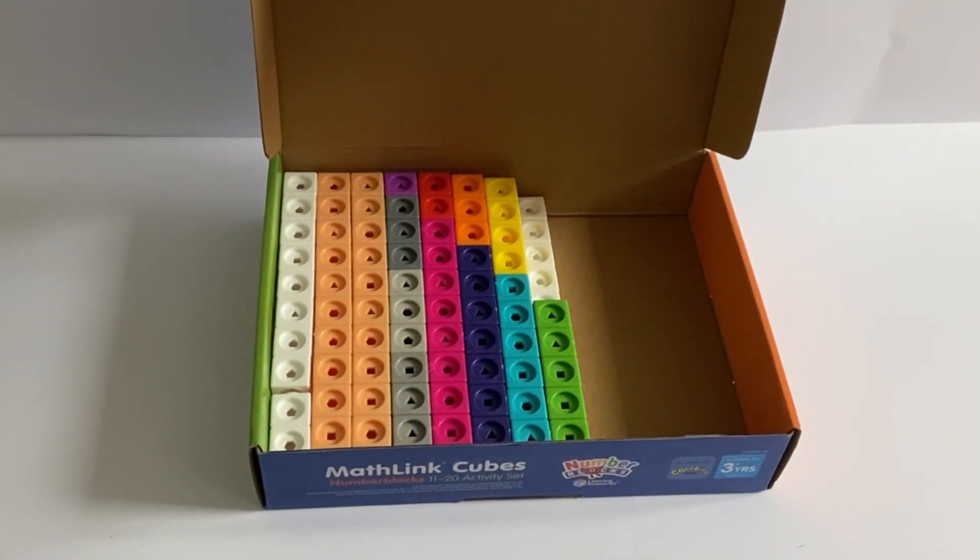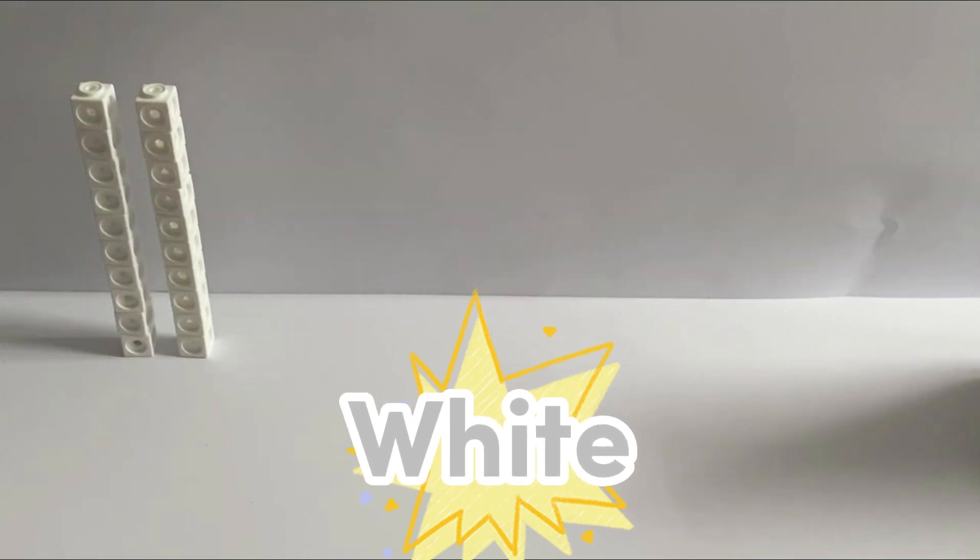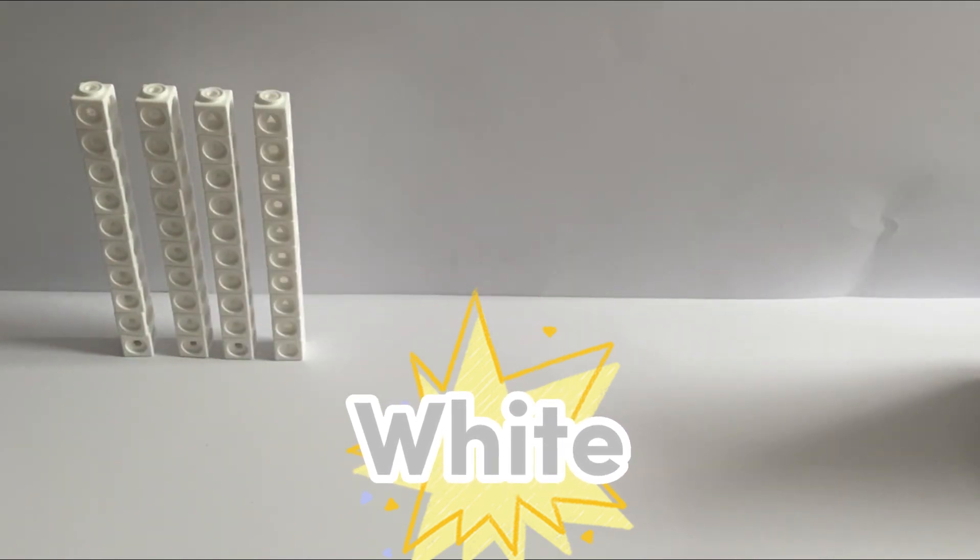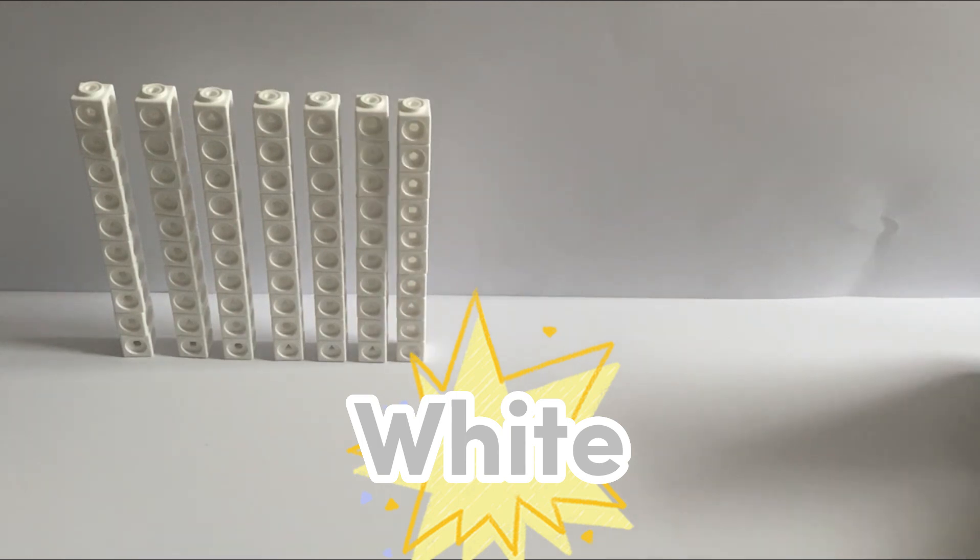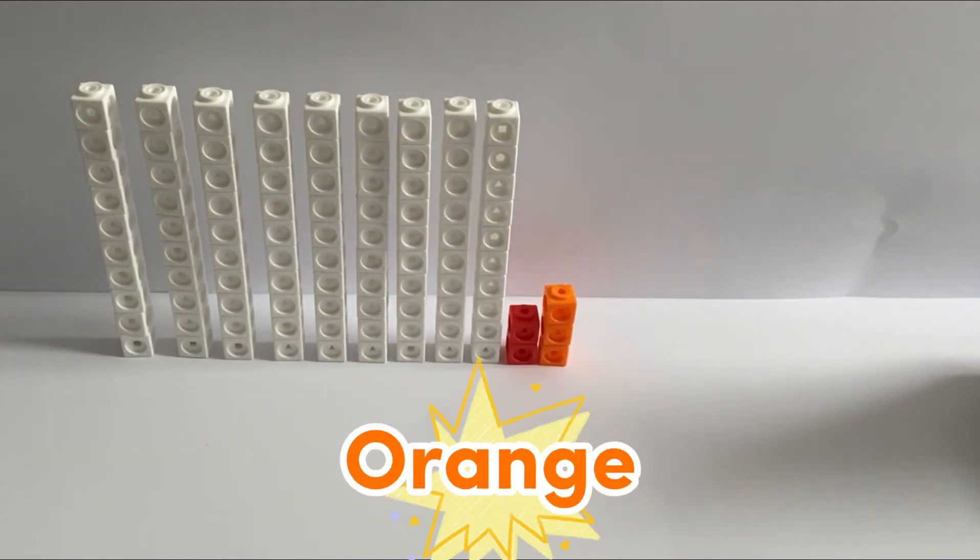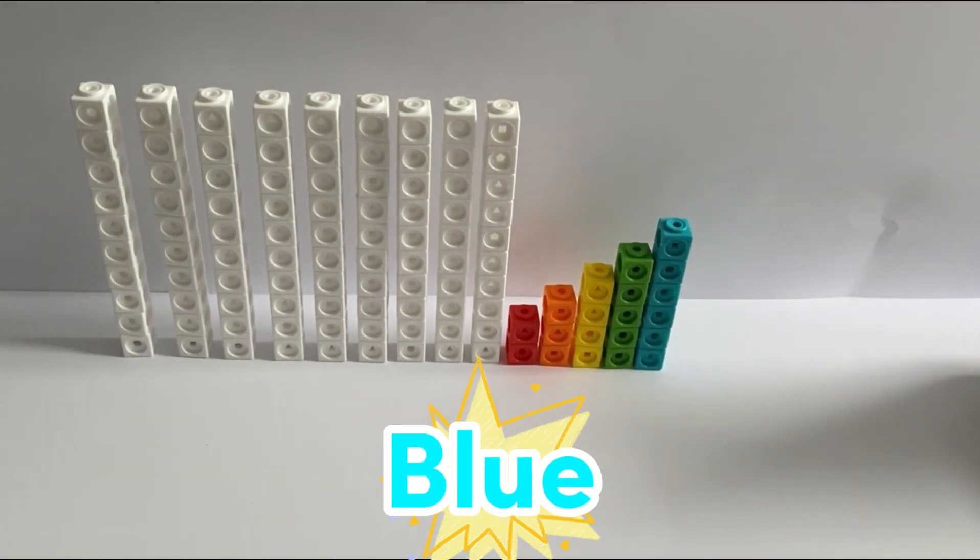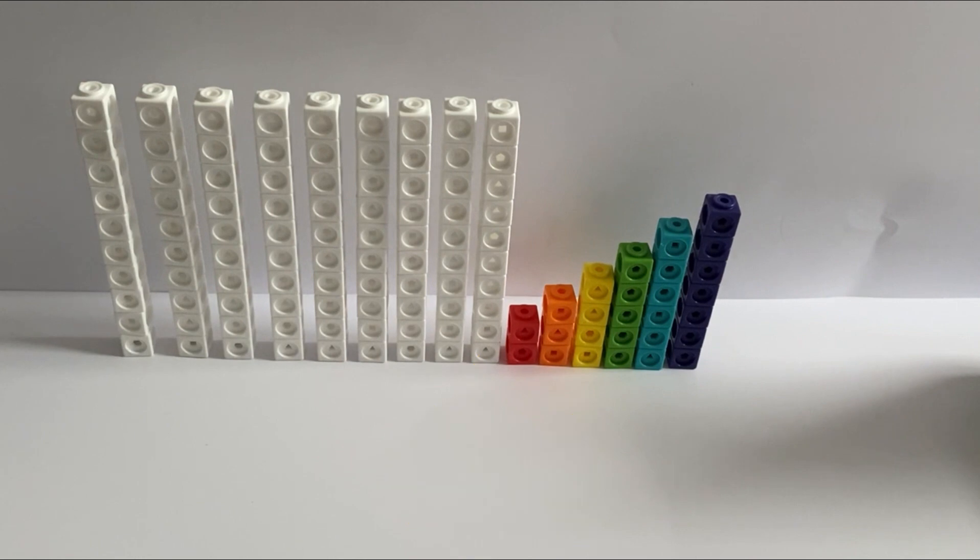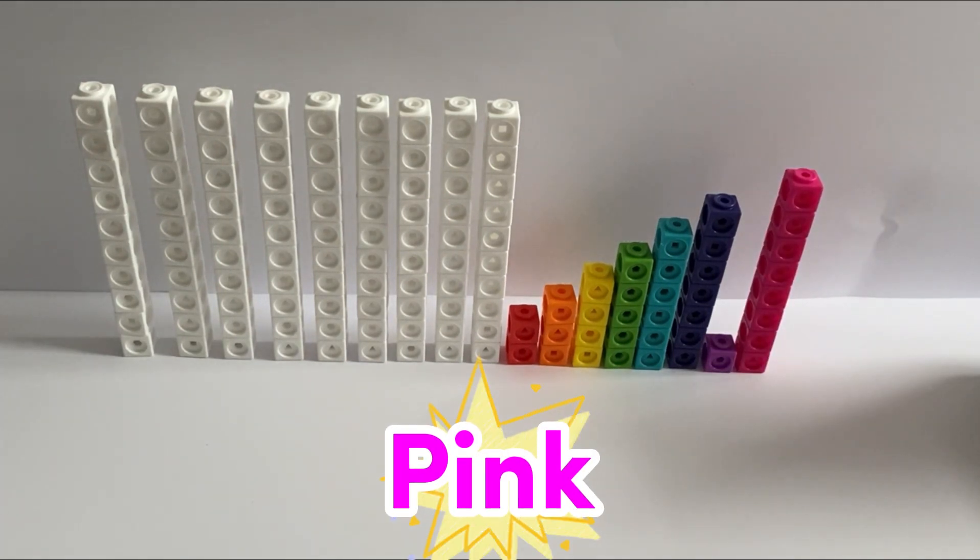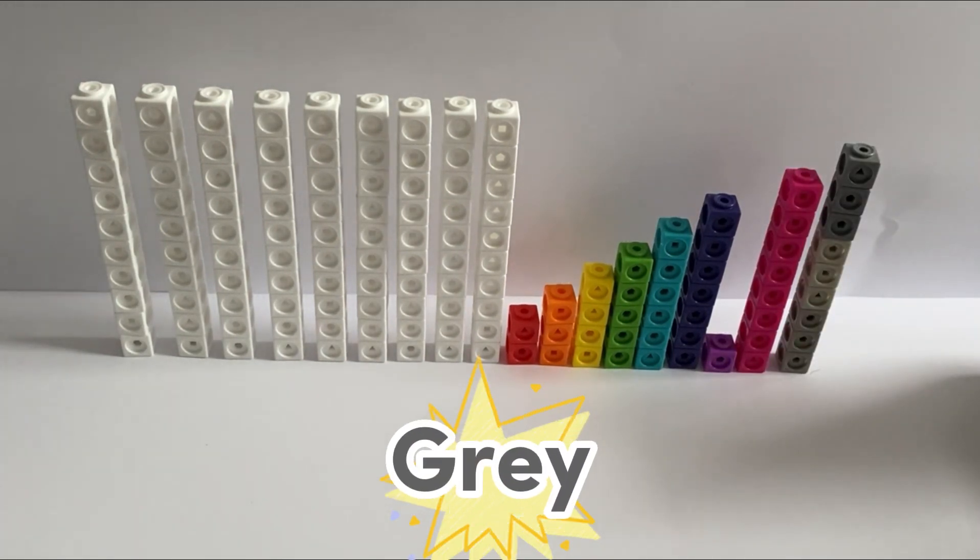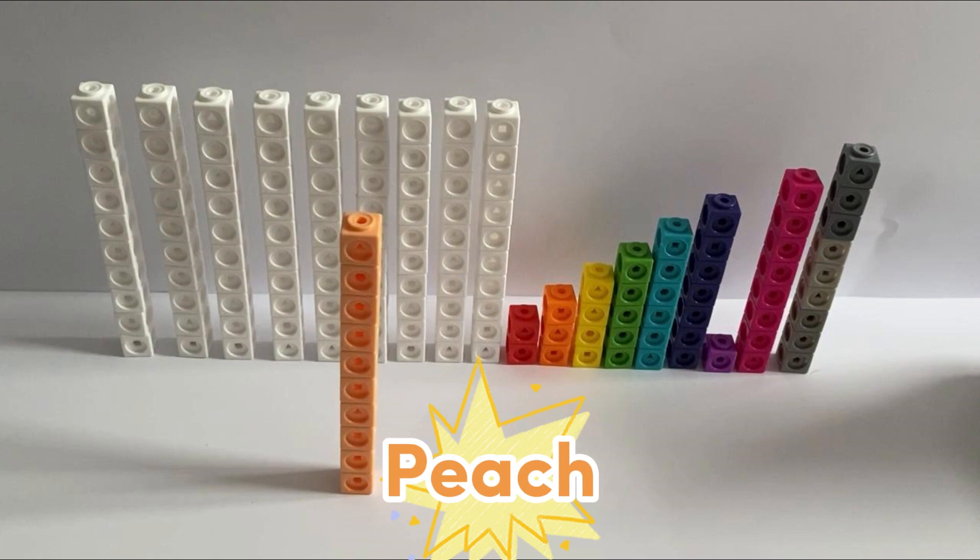And of course we have all the math link cubes. So the set includes 90 white blocks, 2 red blocks, 3 orange blocks, 4 yellow blocks, 5 green blocks, 6 blue blocks, 7 purple blocks, 1 violet block, 8 pink blocks, 9 grey blocks, and of course 20 peach blocks.